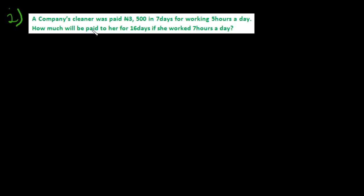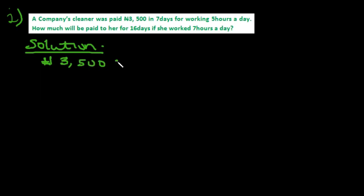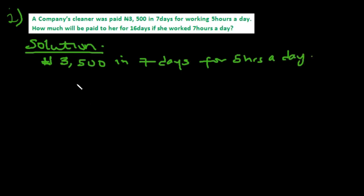Next example: a cleaner was paid 3,500 naira for seven days, working five hours a day. How much should she be paid for 16 days if she works seven hours a day? She is paid 3,500 naira in seven days for five hours a day. That means she earned 3,500 naira in 35 hours total, which is seven multiplied by five.